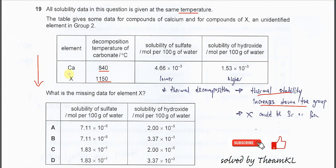This information tells us that X could be strontium or barium, because strontium and barium are lower than calcium in the group. So X could be strontium or barium.